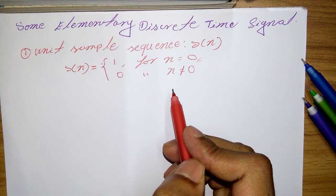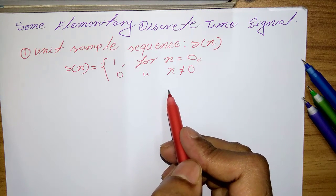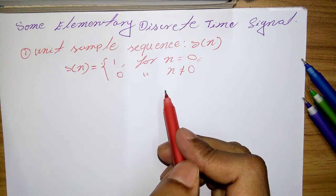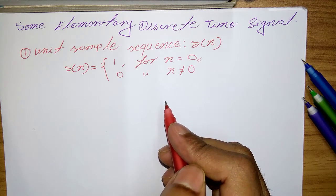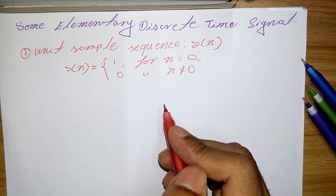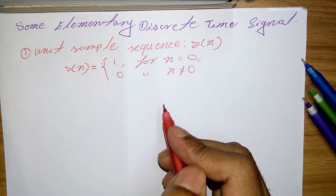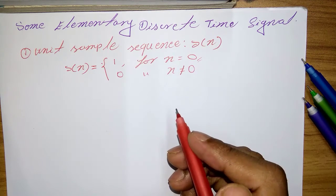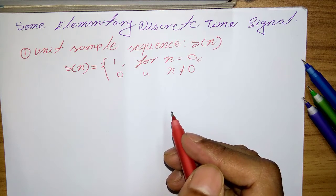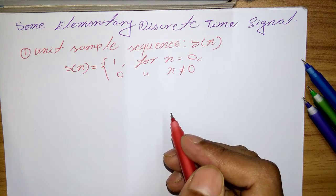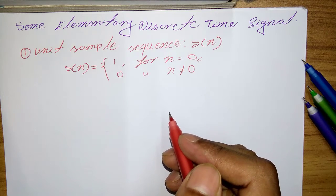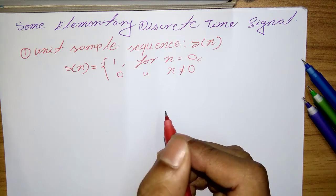The signal is sometimes referred to as a unit impulse. In contrast to the analog signal delta T, which is also called a unit impulse and is defined to be 0 everywhere except at t equal 0 and has unit area.